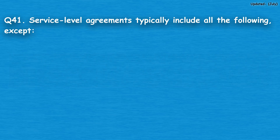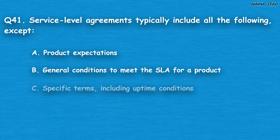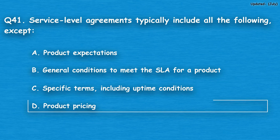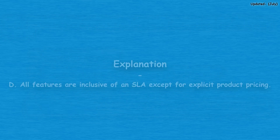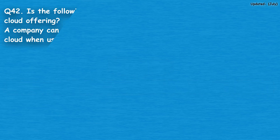Question number 41: Service level agreements typically include all of the following except — option A: product expectations, option B: general conditions to meet the SLA for a product, option C: specific terms including uptime conditions, option D: product pricing. The correct answer is option D, product pricing. All features are inclusive of an SLA except for explicit product pricing.